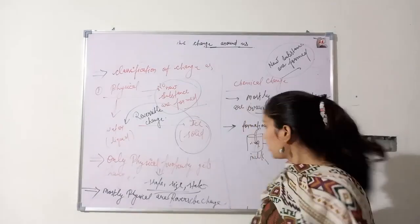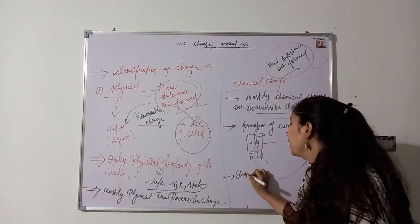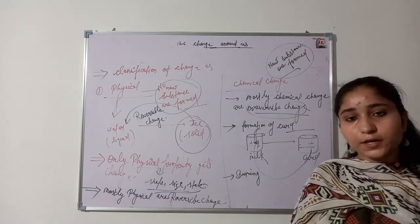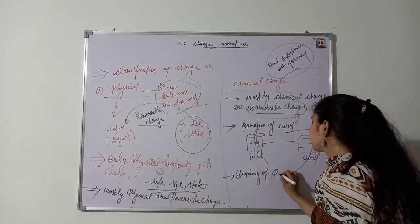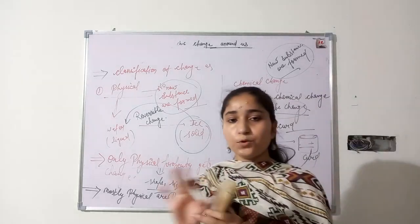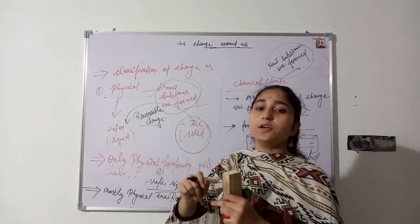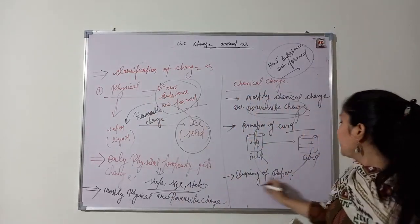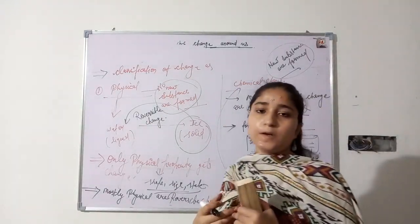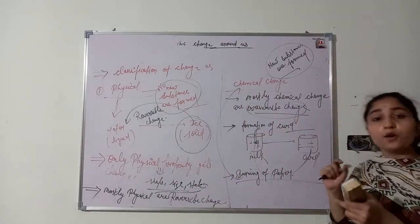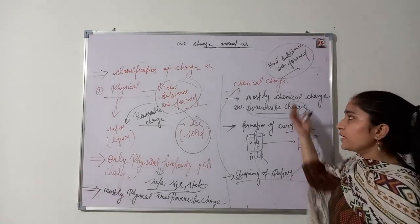Another example of chemical change is burning of paper — not tearing of paper. Tearing of paper is a physical change, because when we tear paper, no new substance is formed — only its shape changes. So tearing of paper comes under physical change. Burning of paper comes under chemical change because after being burnt, paper cannot come back to its original position.